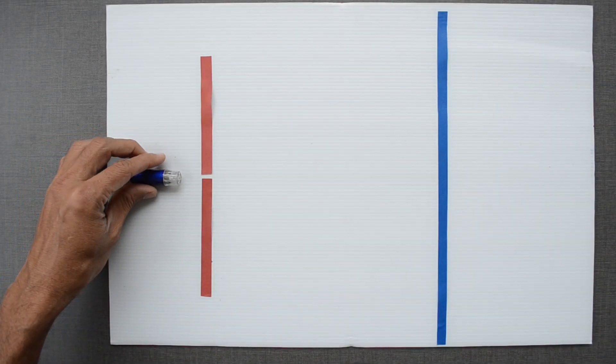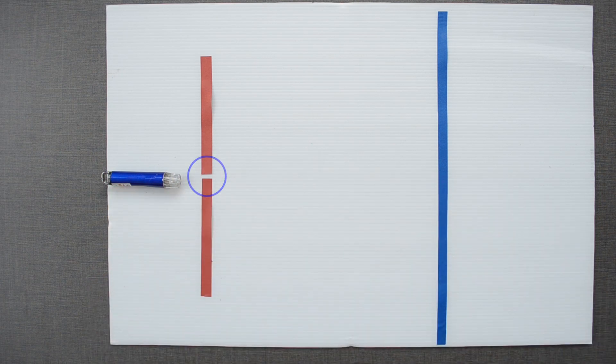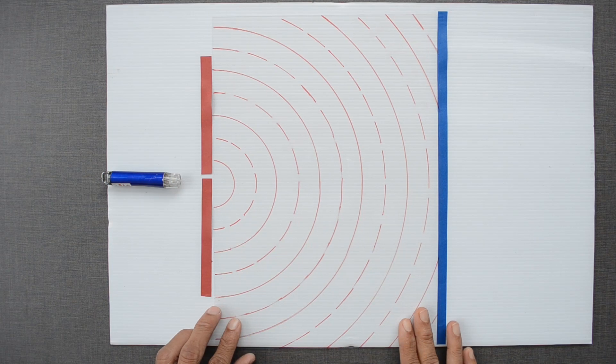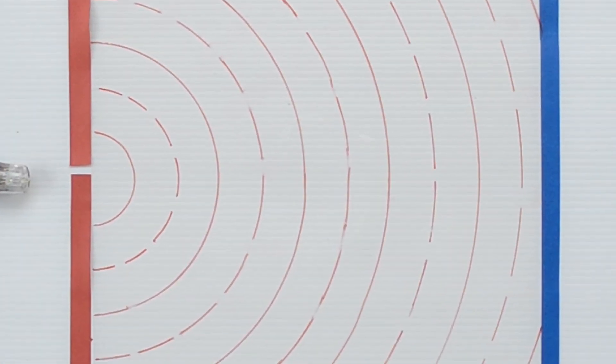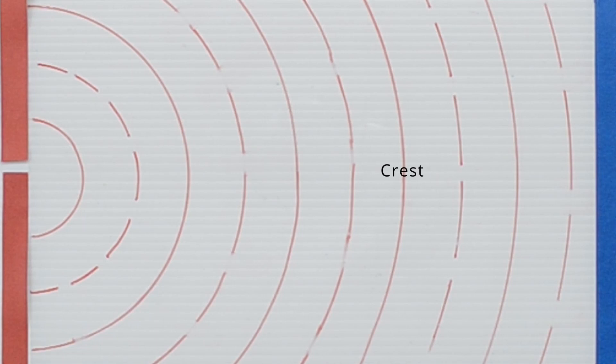Red strip is an obstacle with a small opening, let's say tenth of a millimeter. Blue strip can be considered as a screen. We will use transparent sheets with circles drawn on it. When viewed from the top, solid lines represent crest and dashed lines represent trough.